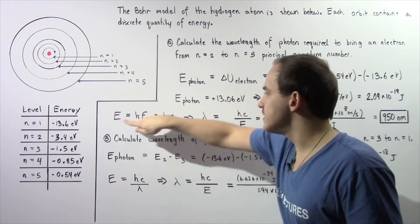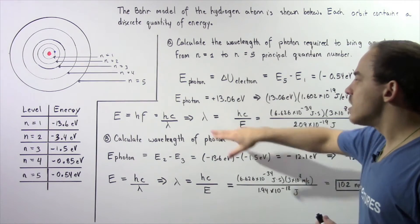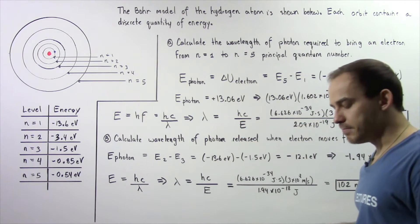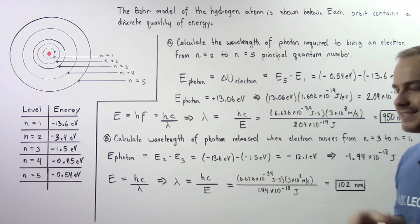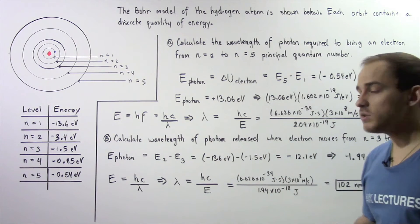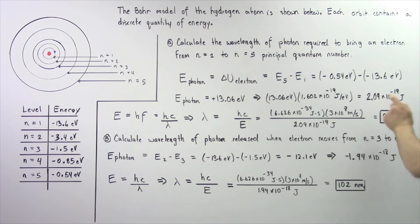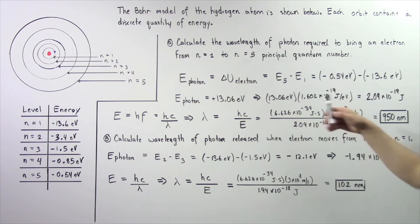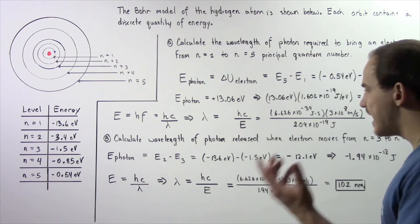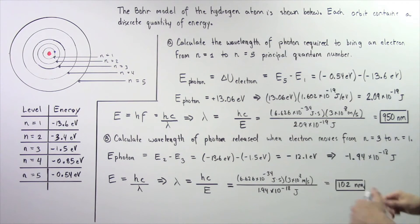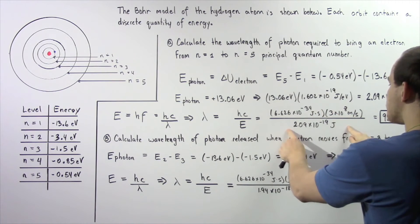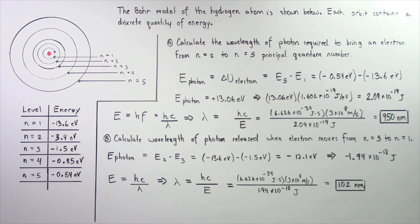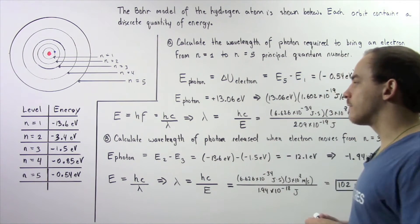Rearranging and solving for the wavelength, the wavelength of that particular photon is equal to h multiplied by c divided by E, where h is Planck's constant, c is the speed of light, and E is the energy of that photon in joules. Planck's constant h is 6.626 times 10 to the negative 34 joule-seconds, and the speed of light is 3 times 10 to the 8 meters per second. Dividing the product of these two numbers by the energy in joules, we are left with about 950 nanometers as the wavelength of that particular photon.